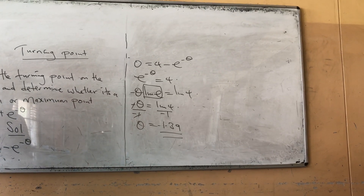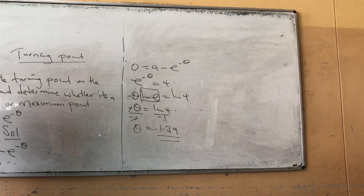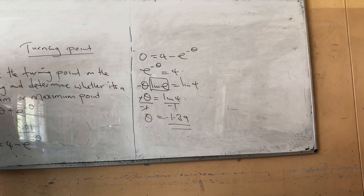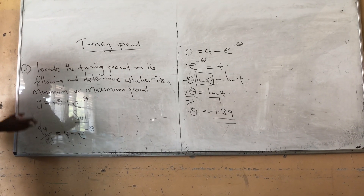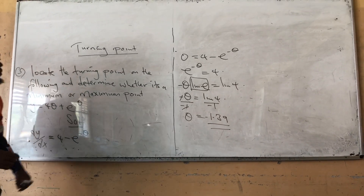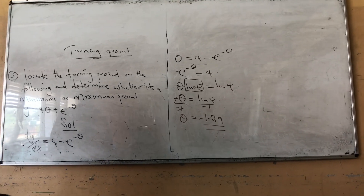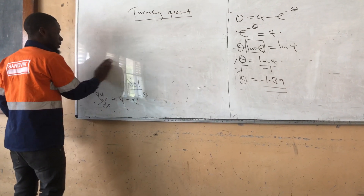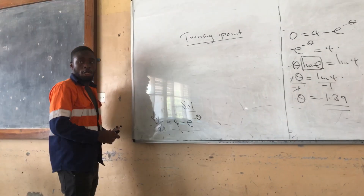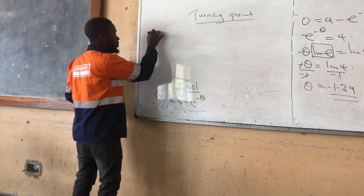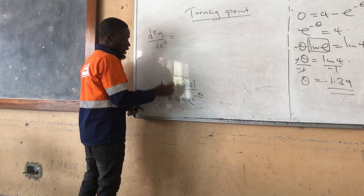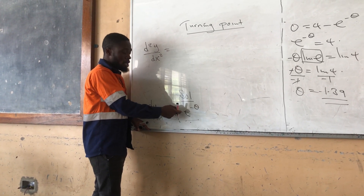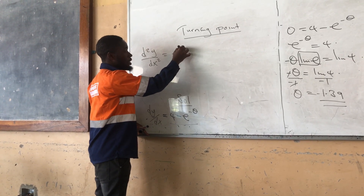Now we need to determine whether it is a minimum or maximum point. We use the second derivative method. If the answer is positive, it will be a minimum; if negative, it will be a maximum. We need to find the second derivative. Differentiating dy/dx equals 4 minus e to the power negative θ: the derivative of 4 is 0, and differentiating negative e to the power negative θ gives e to the power negative θ.